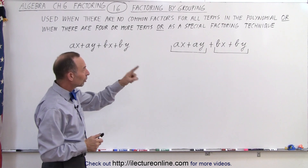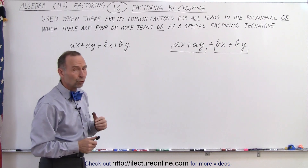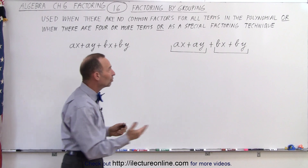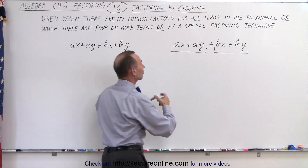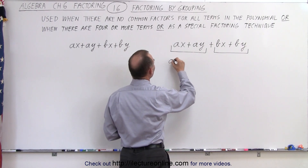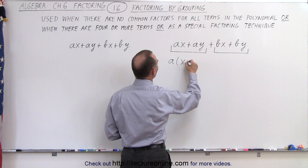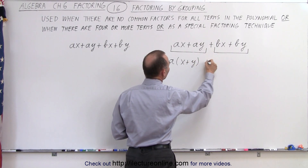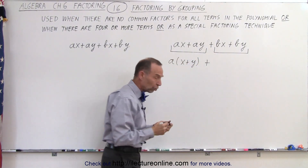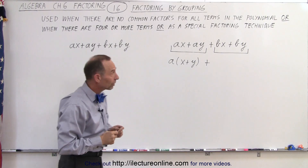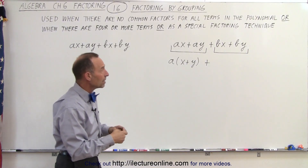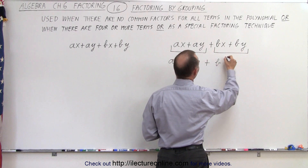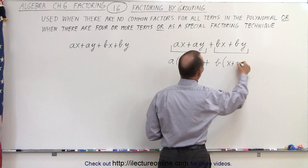When we look at the first two terms, they have a common factor — in this case the variable a — which can then be factored out. So this can be written as a times (x + y). Then we bring down the plus and look at the next two terms, where we can factor out the common factor b, giving us b times (x + y).